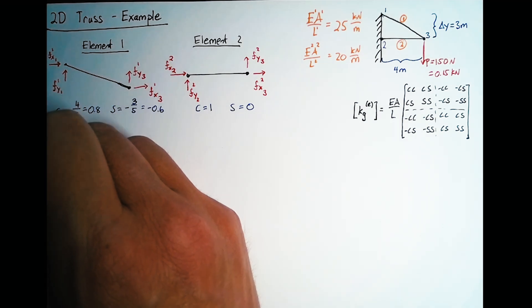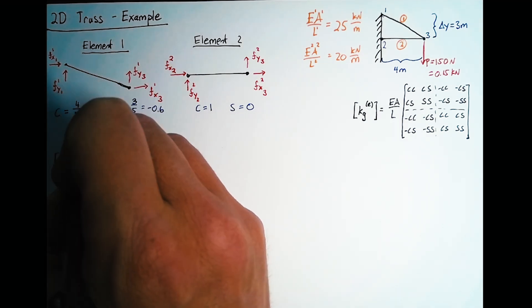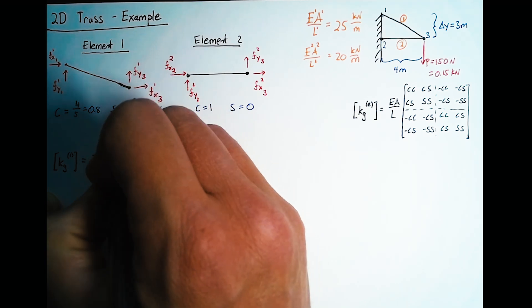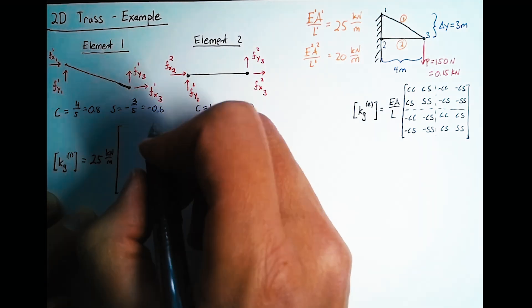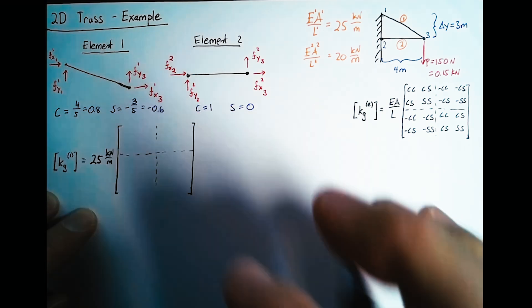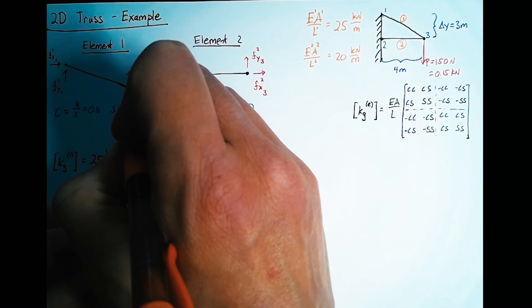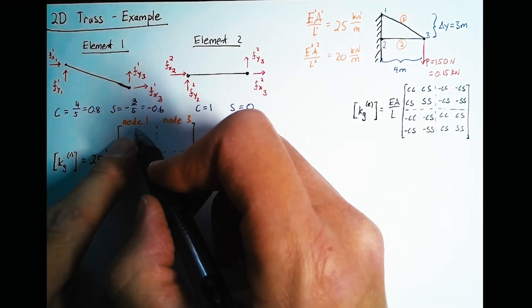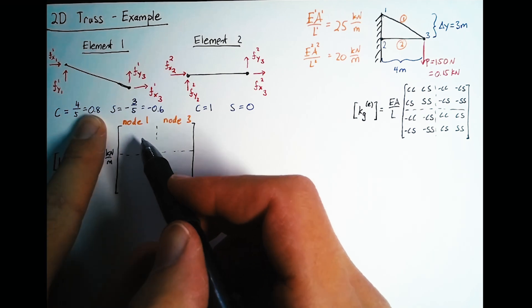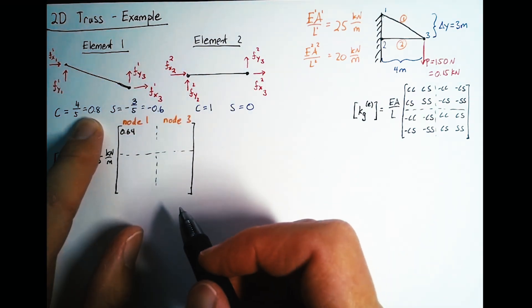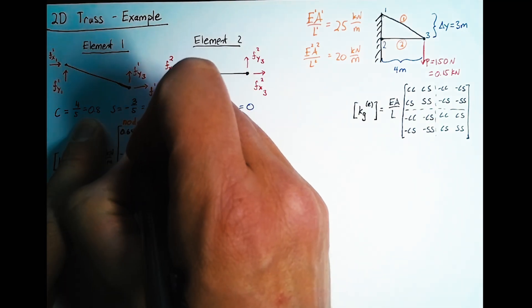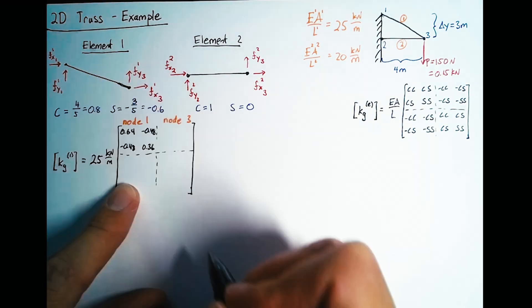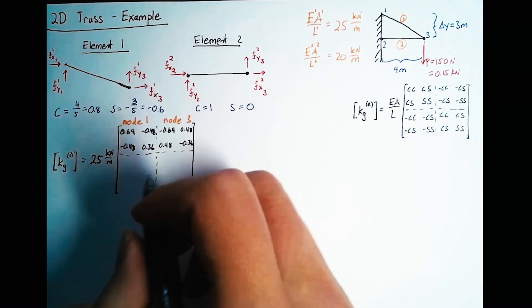Now let's write out the stiffness matrix for element 1. We can write this EA over L as 25 kilonewtons per meter. Then this is our 4 by 4, which we can split into four sub-matrices. Cosine times cosine is 0.8 squared, which is 0.64. Cosine times sine is 0.8 times negative 0.6, so negative 0.48. And sine times sine is 0.36.